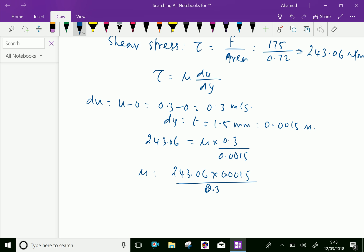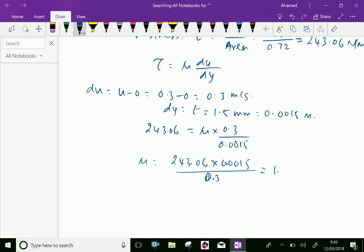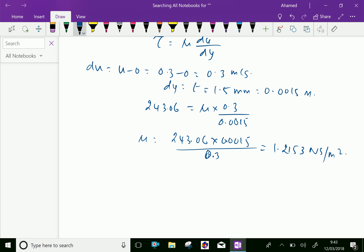243.06 multiplied by 0.0015 over 0.3 equals 1.2153 newton second per meter square. Let us convert this to poise: 1.2153 newton second per meter square equals 12.153 poise.